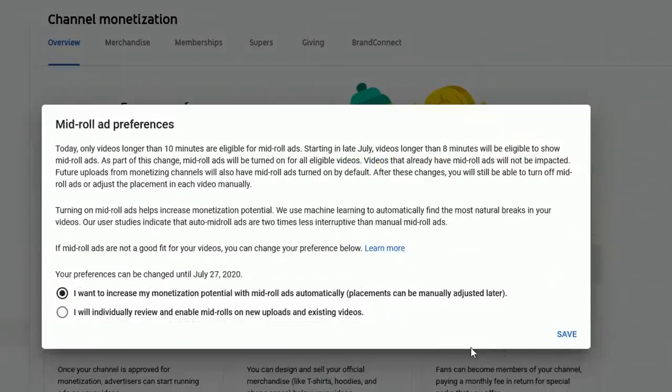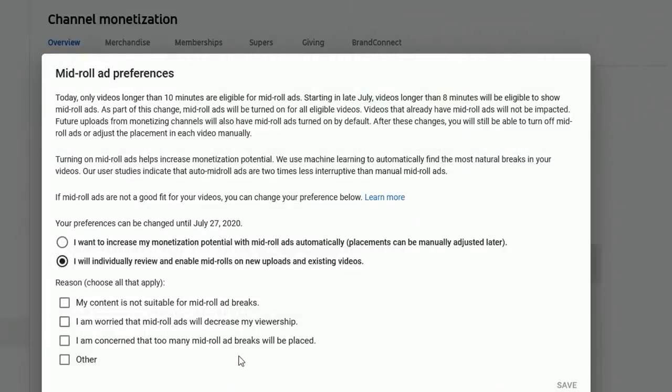So I went in and did that. I had to follow a link to go to preferences. They don't make it easy. You've got to dig. In there, it pulls up this panel that says mid-roll ad preferences. And I selected that I will individually review and enable mid-roll ads. I don't want it to be automatic. And when you make that choice, it pulls down this other list where they want you to choose a reason. And I chose all three. It's because my content is not suitable for them. I'm worried about mid-roll ads decreasing my viewership. And I'm concerned with too many mid-roll ad breaks. So I turned off the default mid-roll ads.